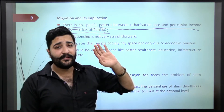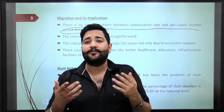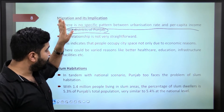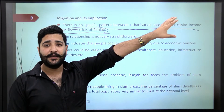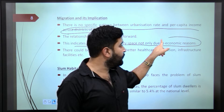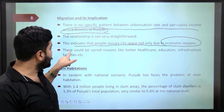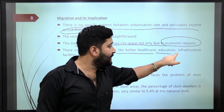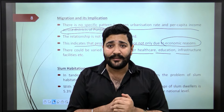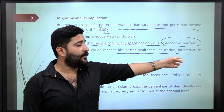Generally, as urbanization increases, per capita income also increases. But in Punjab, there is no specific pattern across districts because our villages are also very prosperous due to a prosperous agriculture sector. The relationship is not straightforward. This indicates that people occupy city space not only due to economic reasons — people also migrate for better healthcare, education, and infrastructure.